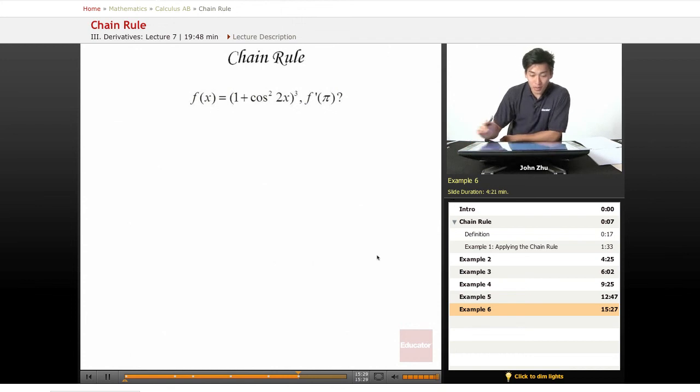Looking at one final example, f of x equals 1 plus cosine squared of 2x to the cube root. Right away we see that there's a squared cosine term. Let's just go ahead and try to find out what that is.